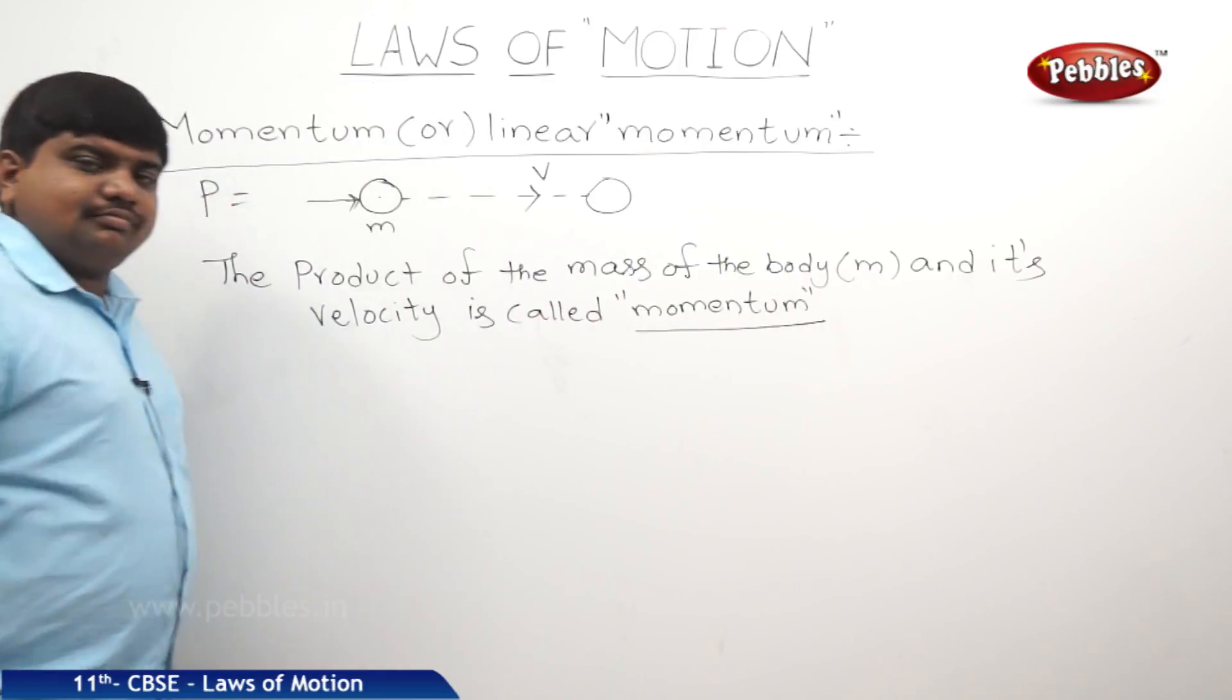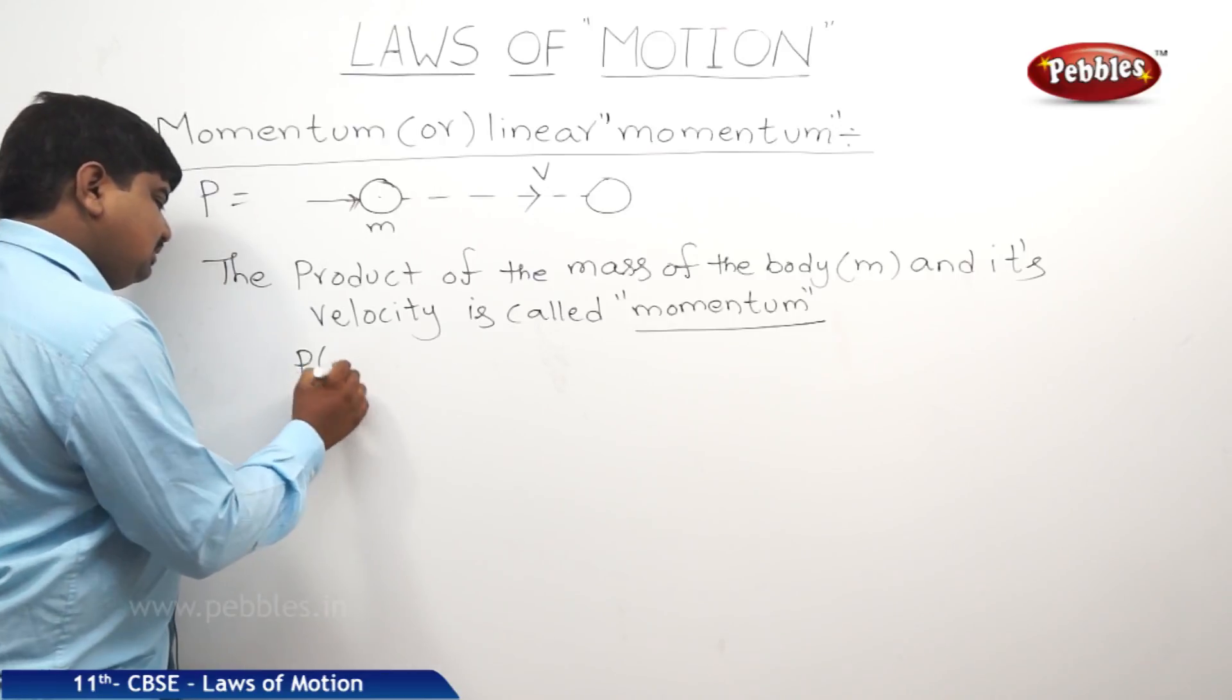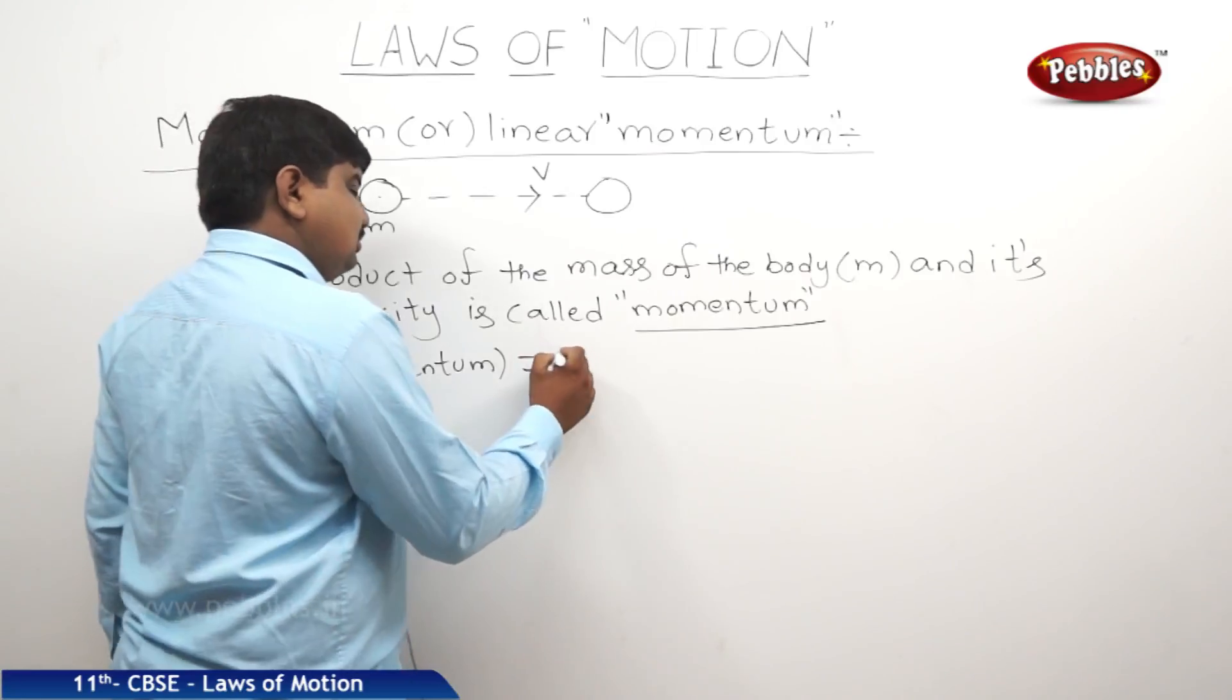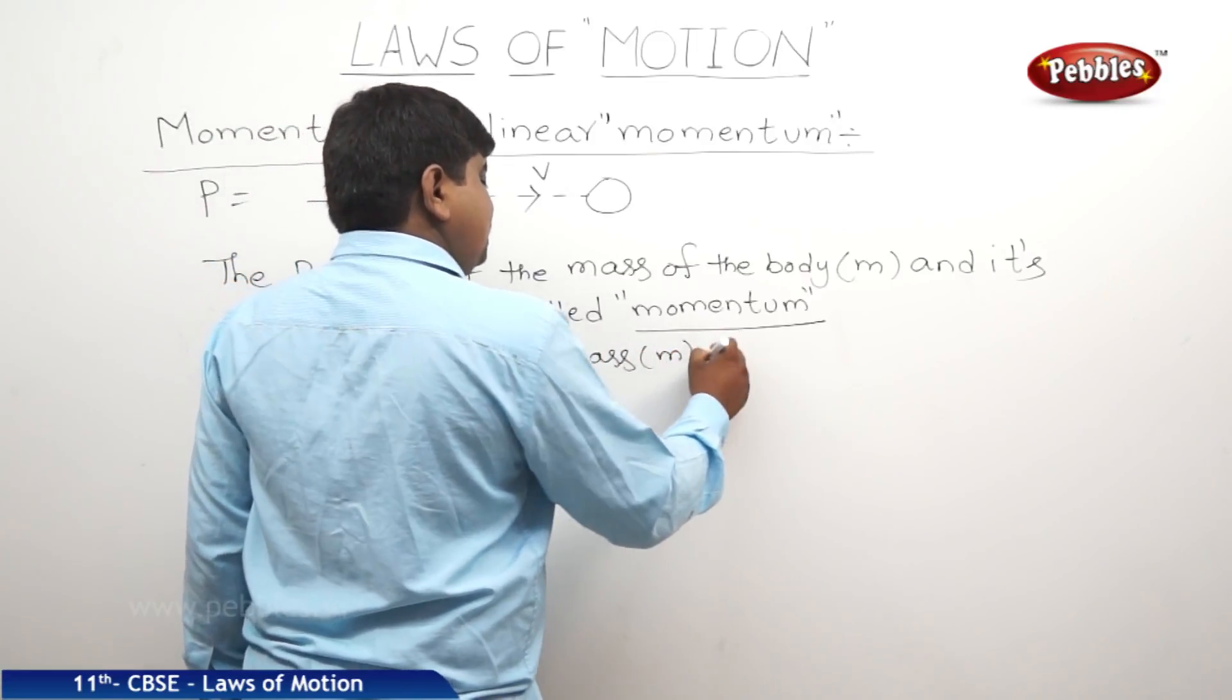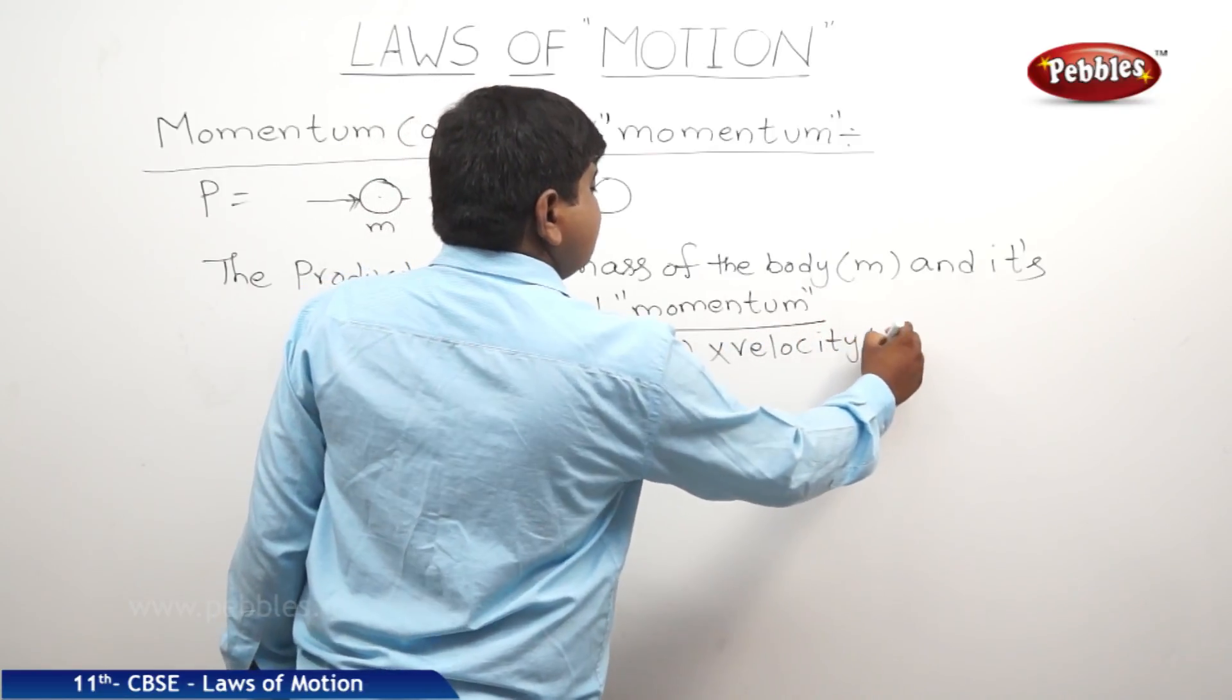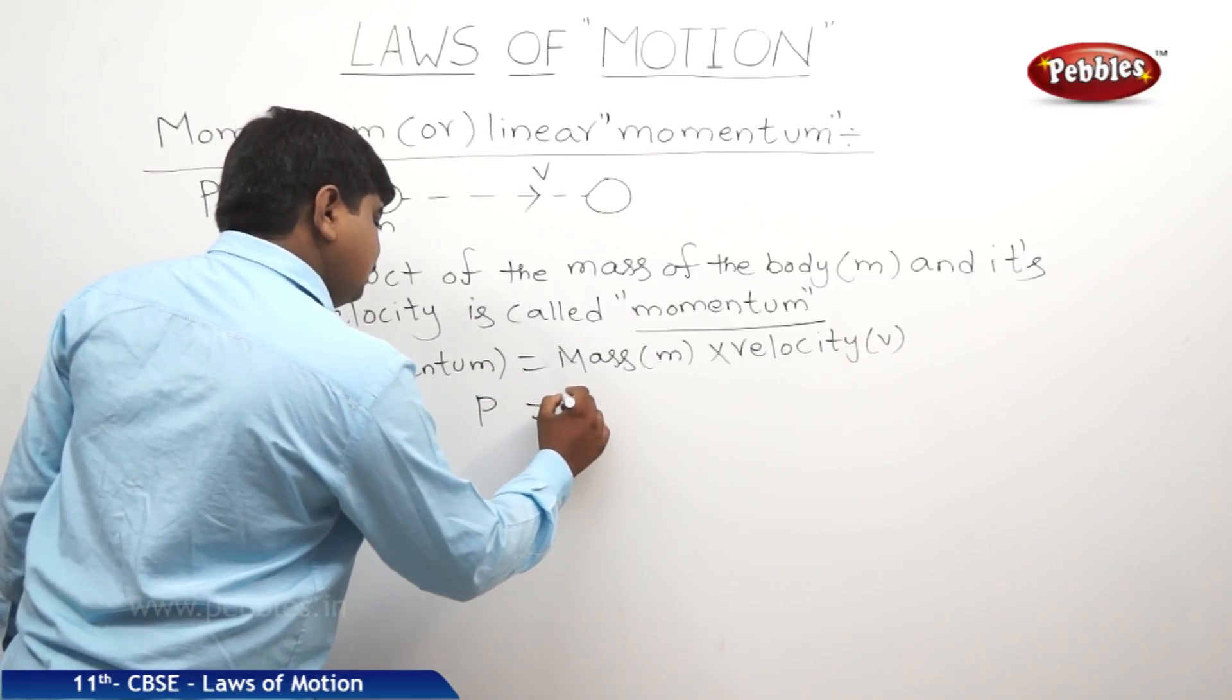So P, nothing but momentum, is equal to mass, nothing but small m, into velocity. Therefore P is equal to mV.